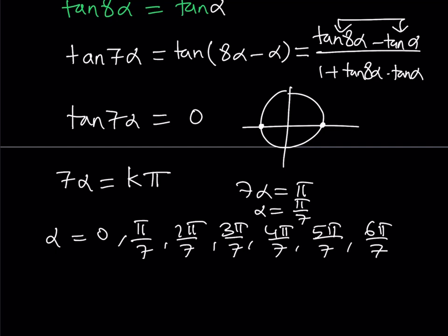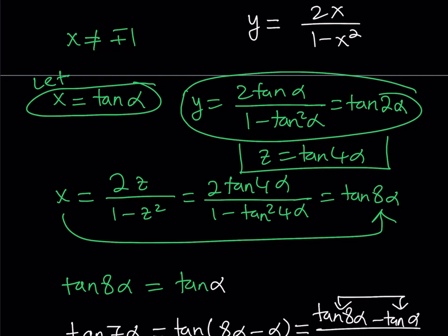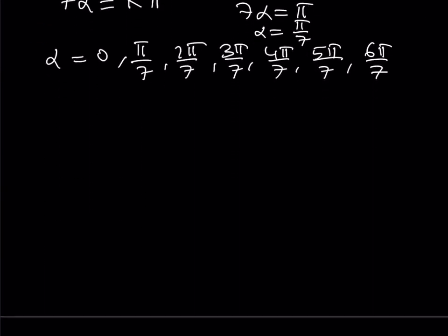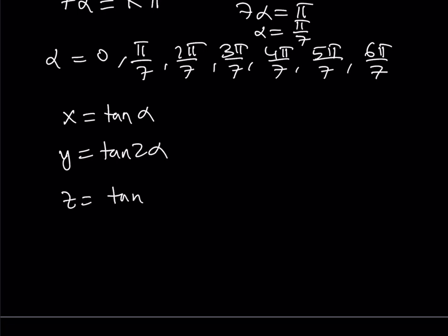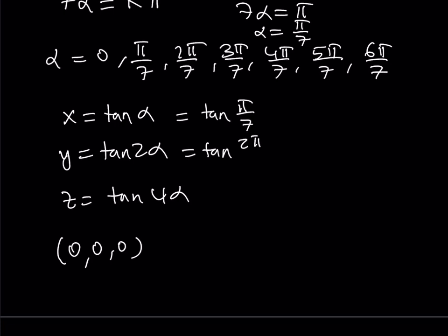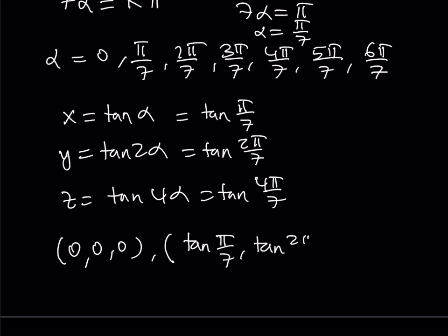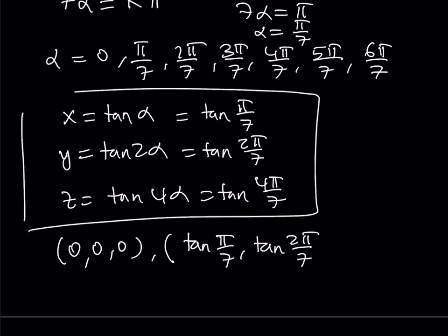We need to find the x, y, z values. We use our substitutions: x equals tangent alpha, y equals tangent 2 alpha, z equals tangent 4 alpha. For alpha=0 we get the triple (0, 0, 0). For alpha = pi/7 we get (tan(pi/7), tan(2pi/7), tan(4pi/7)). Continuing through all alpha values gives us all the ordered triples.